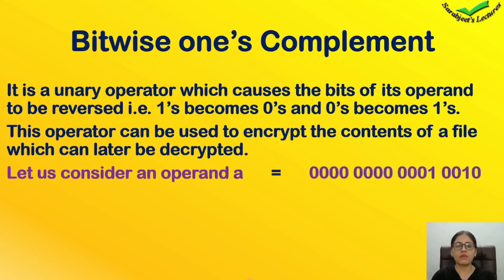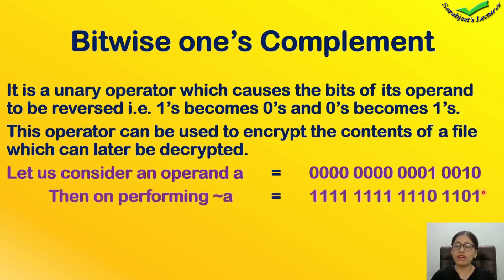Next, we will see an example. In that example, we will see that we have one operand named 'a' and its binary equivalent. If we want to calculate a one's complement, we will start from the right side. Zero will be converted to one, then one will be converted to zero, zero will be converted to one, zero again converted to one, one will be converted to zero, and the rest of the zeros will be converted to one.